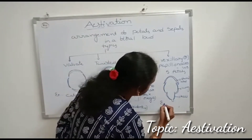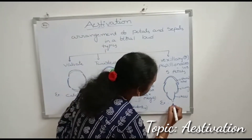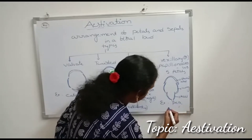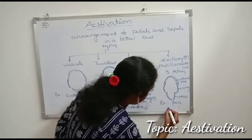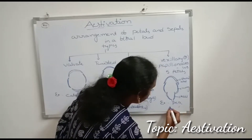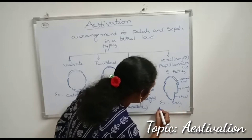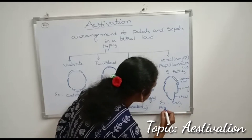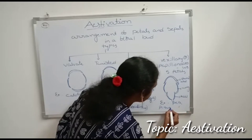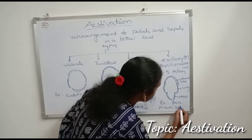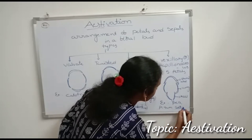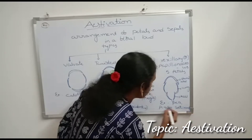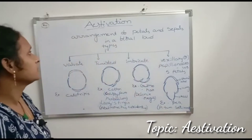An example of vaxillary estivation is the pea plant. The scientific name of the pea plant is Pisum sativum.